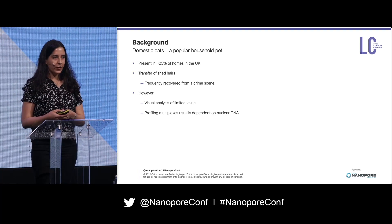There are profiling multiplexes which exist for individual identification of cats, but these are usually dependent on nuclear DNA which you're not really likely to recover from hair samples. So you then have to depend on mitochondrial DNA, which is less discriminating given its maternal mode of inheritance and lack of recombination, but you're more likely to recover mitochondrial DNA given its higher copy number and greater stability.